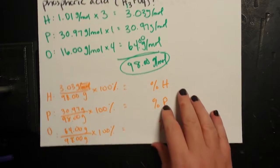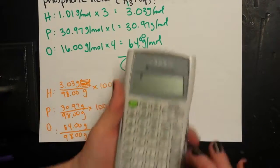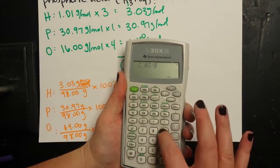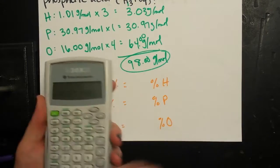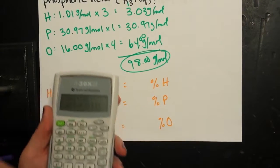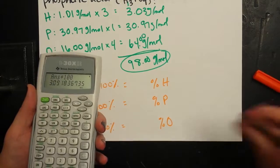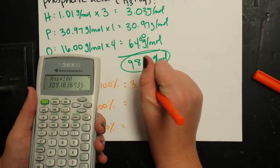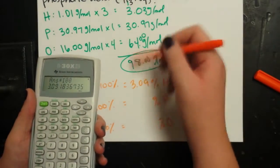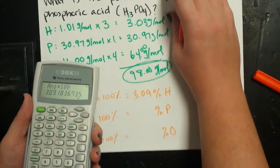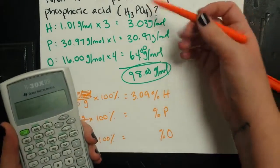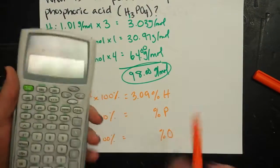Let's go ahead and do the math. So we're going to get 3.03 divided by 98 times 100. So about 3.09% hydrogen. Phosphoric acid is 3.09% hydrogen.